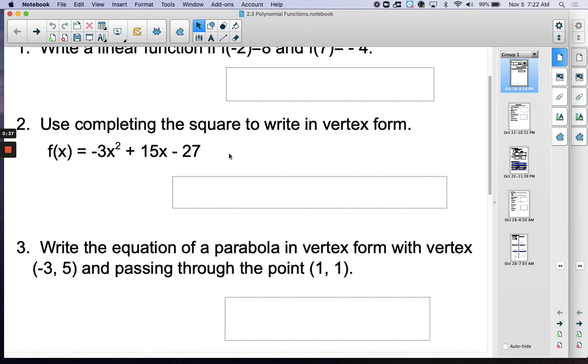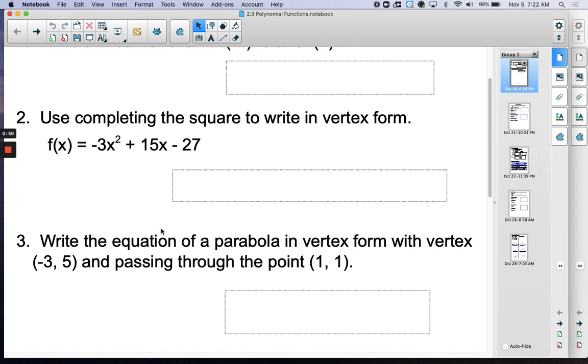Now if you can't complete the square, there's the second sort of quick way, the negative b over 2a. But I'd really like you to try to complete the square on this. There's some tricky things with the negative, so be careful. And again, on the next video I'll reveal the answer.